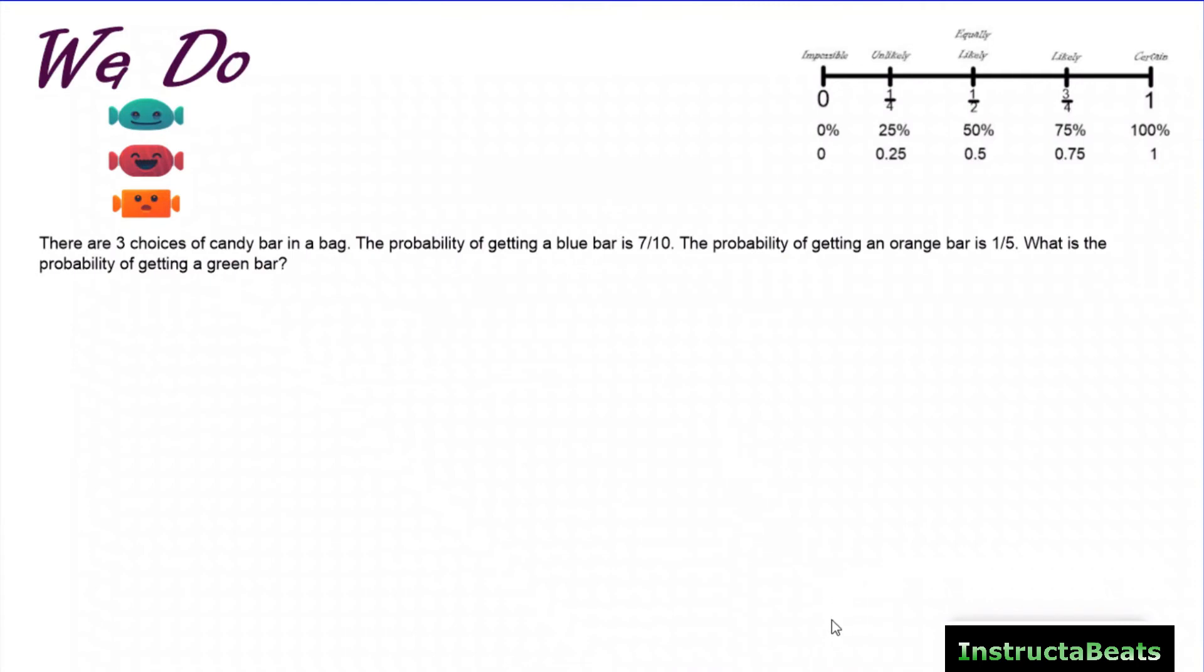So here we have our We Do problem. It says there are three choices of candy bar in a bag. Here they are, blue, red, and orange. The probability of getting a blue bar is 7/10. The probability of getting an orange bar is 1/5. What is the probability of getting a green bar? So I know the blue bar was 7/10. The orange bar was 1/5. What is the probability of getting a green bar? Well, if you're randomly taking one of the candy bars out of the bag, there is a 100% chance that you are going to grab a candy bar. So if we start with one whole, and then we take away the probability of getting the blue bar, and then we take away the probability of getting the orange bar, that's going to leave us with the green bar.